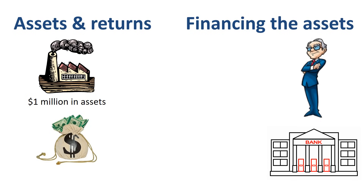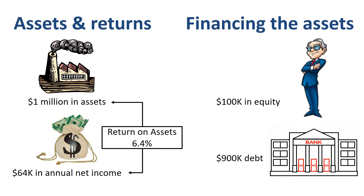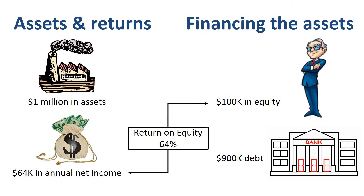One more step. What if we finance the assets with only $100,000 in equity and a massive $900,000 in debt, assuming you can find a bank willing to grant or arrange a loan with that kind of financial leverage? Net income drops to $64,000, and return on assets drops accordingly to 6.4%. Return on equity goes up dramatically: $64,000 in net income divided by $100,000 in equity generates a return on equity of 64%.